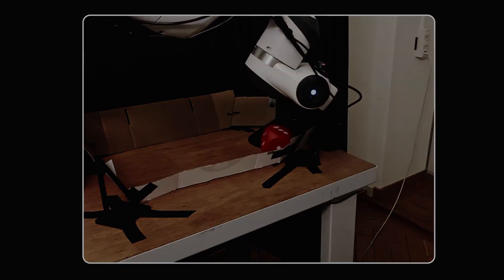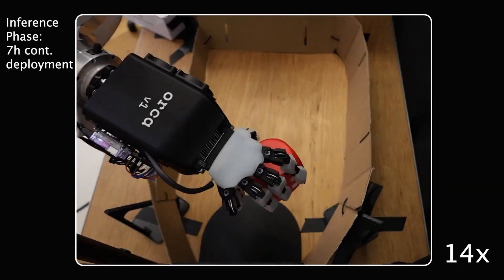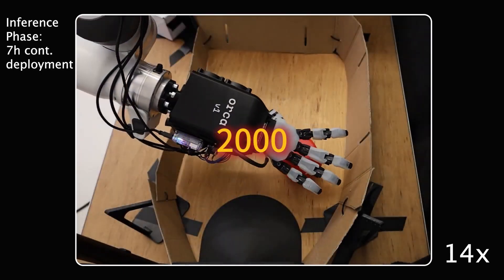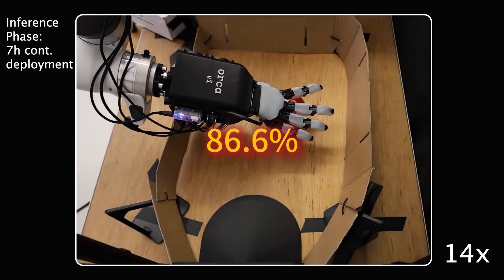In subsequent experiments, Orca hand ran continuously for seven hours, executing over 2,000 grasp-and-place operations with a peak success rate of 86.6%.